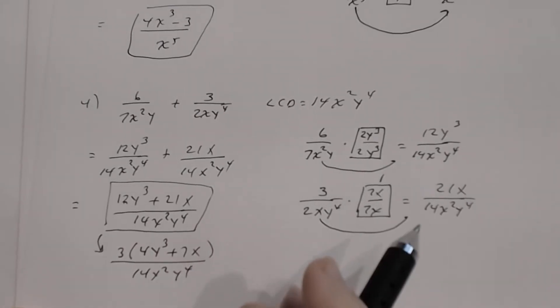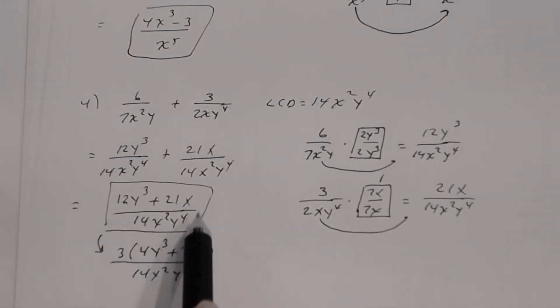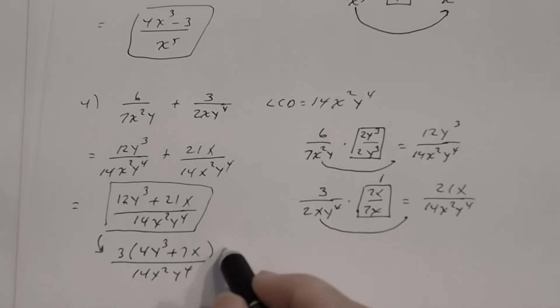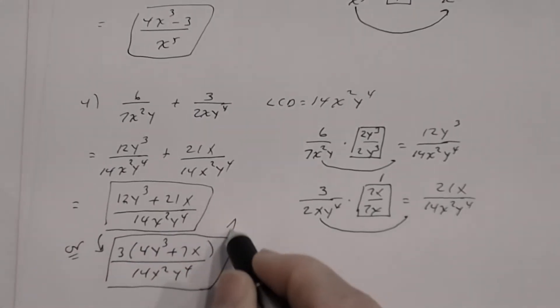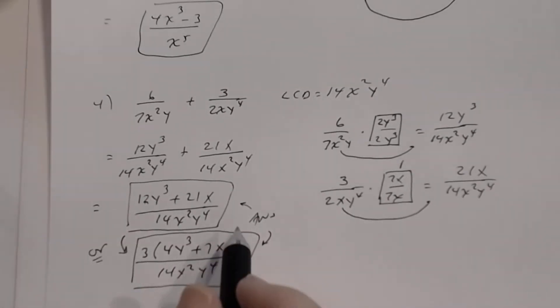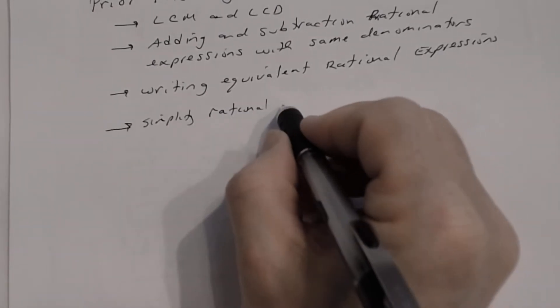In the end, if you can simplify by factoring the numerator and something cancels with the denominator, you must do so from previous lessons on simplifying rational expressions. Here nothing cancels, so the answer is (12y³ + 21x)/(14x²y⁴) or equivalently 3(4y³ + 7x)/(14x²y⁴).